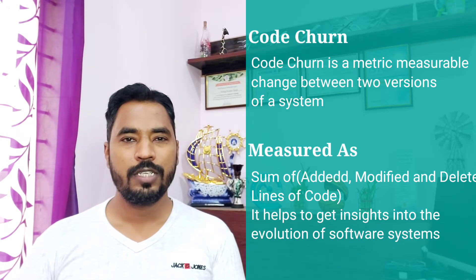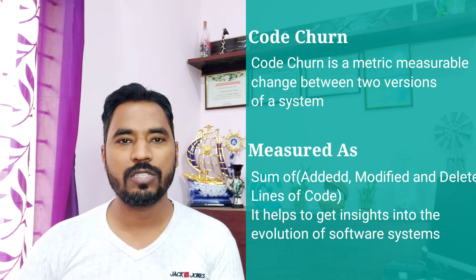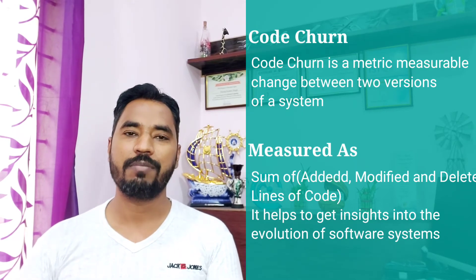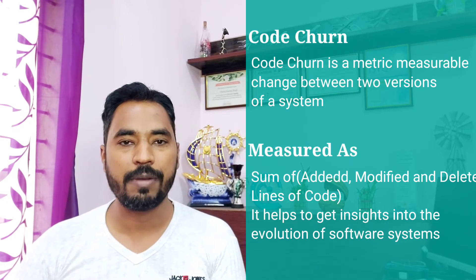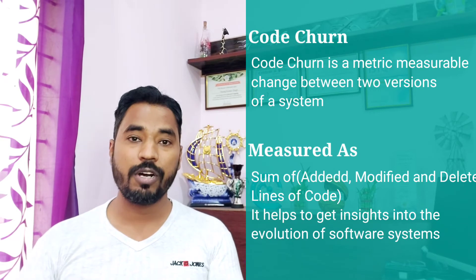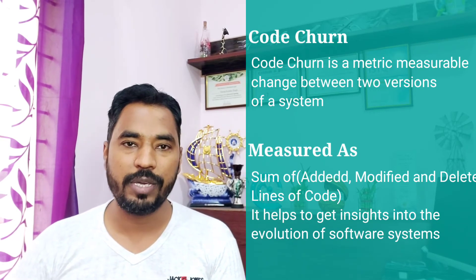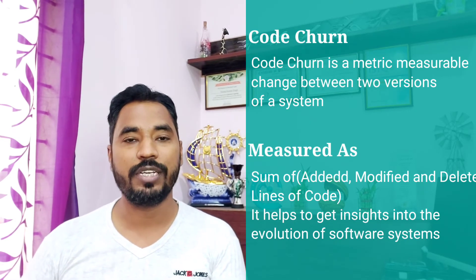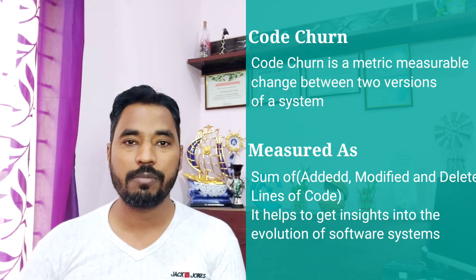So what is code churn helpful for? Why should we measure changes between two different versions of the code? Because at any point of time the efficiency of the team can be measured — how much rework is happening compared to new code being written. If you are involved with more rework unnecessarily, it will create a lot of lag and you will definitely miss deadlines.